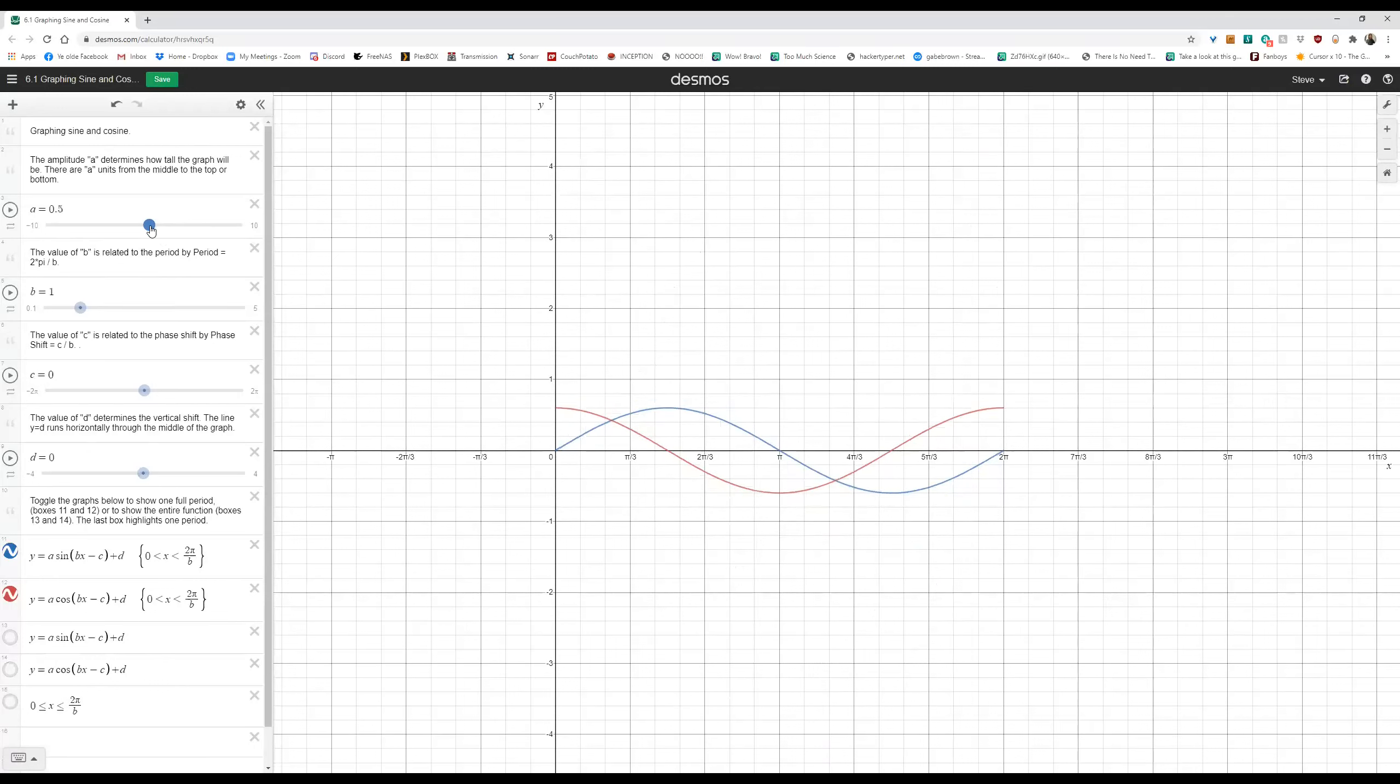If I go past 0 and the negative values for a, I end up getting a vertical reflection of both of those graphs. So where cosine used to start up at 1, now it would start down at negative 1, and then move up from there and go through the rest of its pattern.